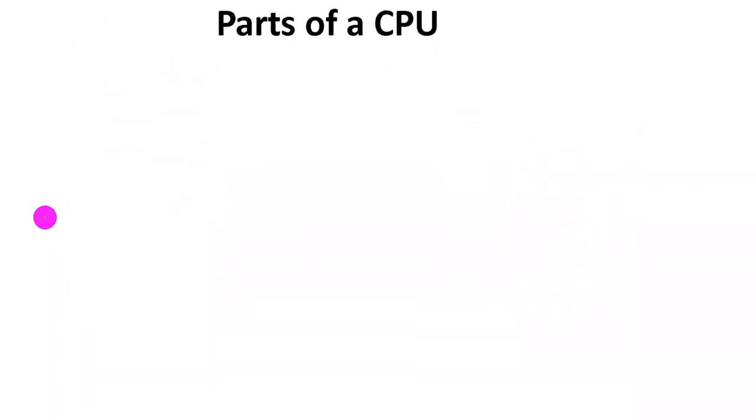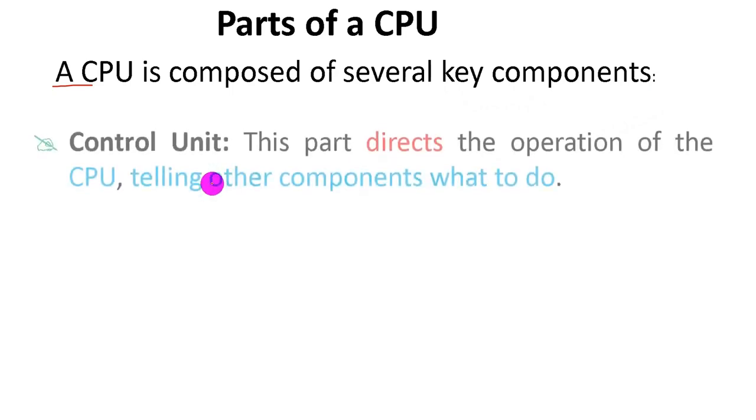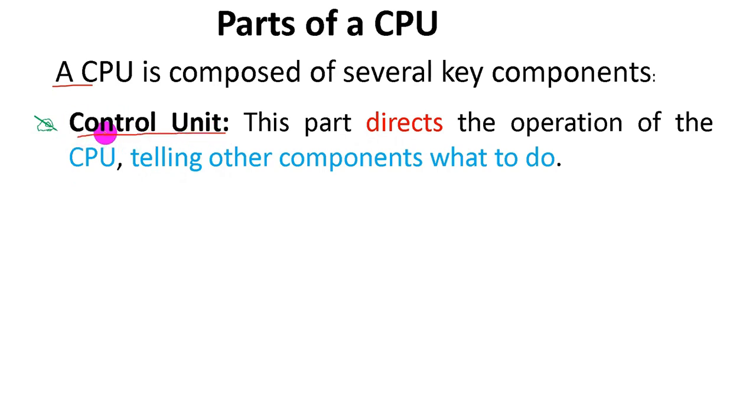Parts of CPU or components of CPU. The CPU is composed of several key components, but these key components are categorized into four. The first one is the control unit. As the name indicates, it controls the activity of the central processing unit and other components of one computer. This part directs or controls the operation of the CPU, central processing unit, as well as gives direction to other components of the CPU, telling other components of the CPU what to do. It directs or controls the operation of the central processing unit, as well as gives direction to other components like input, output, and RAM.